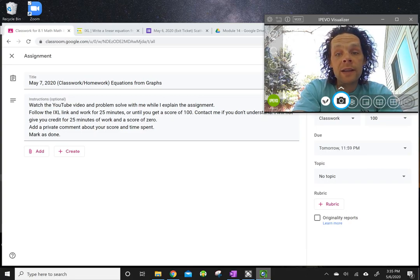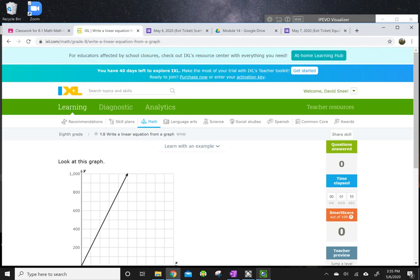Then you're going to follow the IXL link, and you're going to work for 25 minutes or until you get a score of 100. You're going to contact me if you don't understand, because you won't receive full credit for 25 minutes of work and a score of 0. You need to get to 60. You're going to add a private comment about your score and time spent, and mark it as done.